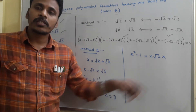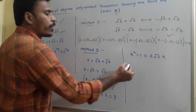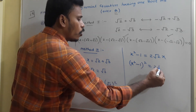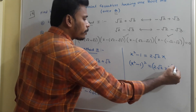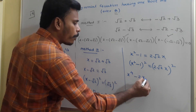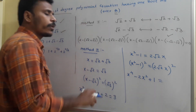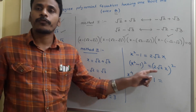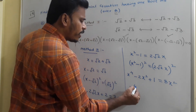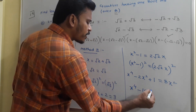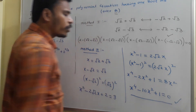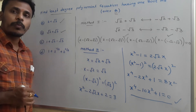To eliminate the root 2 x term, square both sides again: (x squared minus 1) squared equals (2 root 2 x) squared. Expanding the left side: x to the 4th minus 2x squared plus 1. The right side: 4 times 2 times x squared equals 8x squared. Rearranging: x to the 4th minus 10x squared plus 1 equals 0. This is the required 4th-degree equation having one root as root 2 plus root 3.